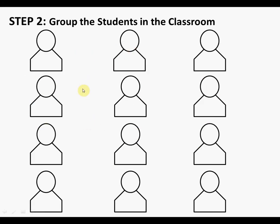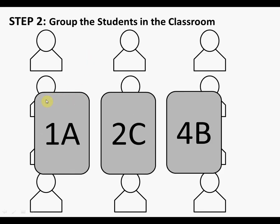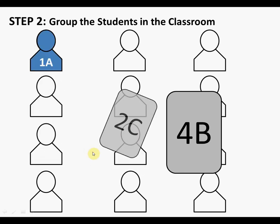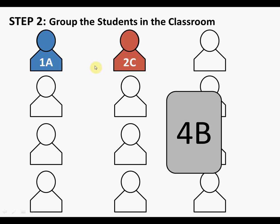Another way to group students takes a little more preparation but creates a more random selection, since students tend to sit with friends they're comfortable with. Prepare index cards or small note cards with the number and letter already on them — 1A, 1B, 1C, 2A, 2B, 2C, and so on — then mix them up before handing them out so the grouping is more random.